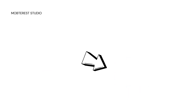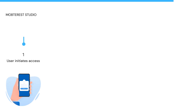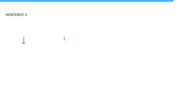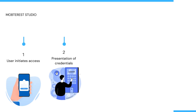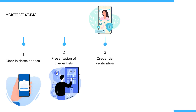The authentication process typically follows these steps. First, the user initiates access by requesting access to an application. Then there is the presentation of credentials, where the user provides the necessary authentication credentials such as a username and password or a fingerprint scan.